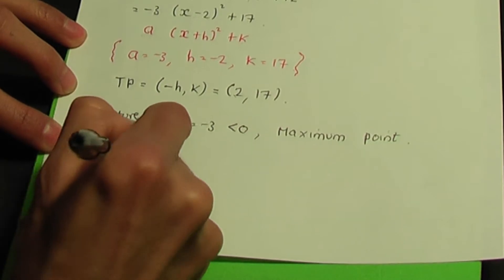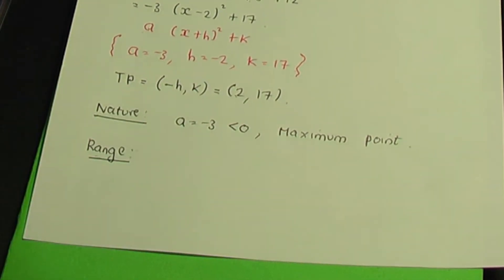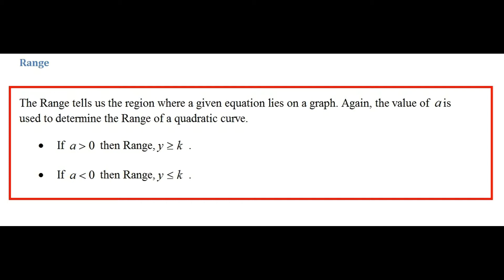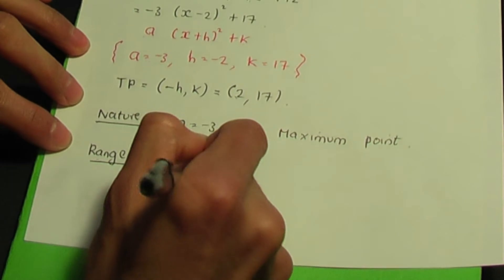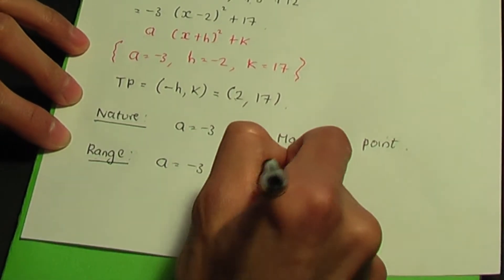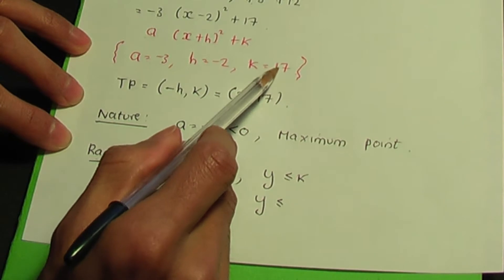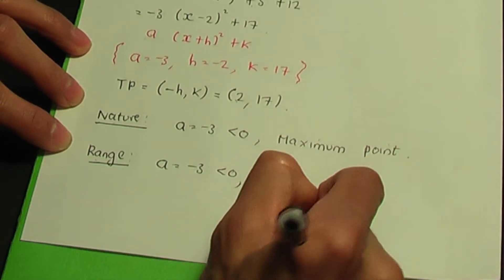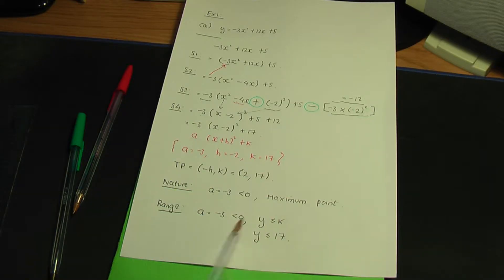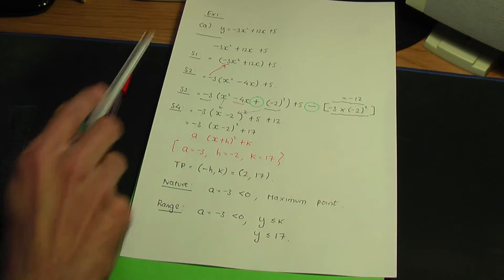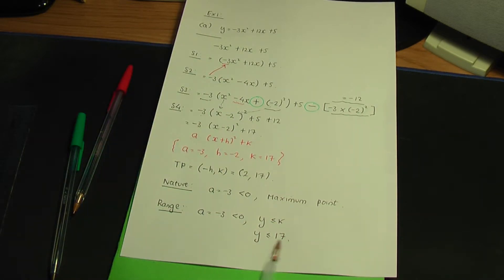Finally, let's state the range. If a is greater than 0, the range is y greater than or equal to k. If a is less than 0, the range is y less than or equal to k. Our a value is minus 3, which is less than 0, so the range is y less than or equal to k. Our k value is 17, so the range is y less than or equal to 17. This means the whole quadratic lies below the line y = 17.